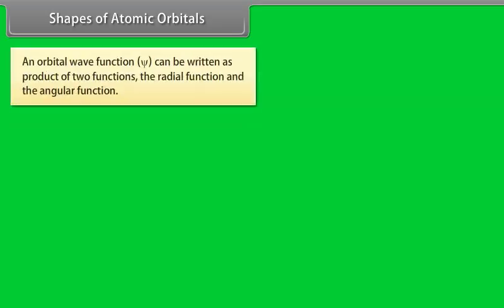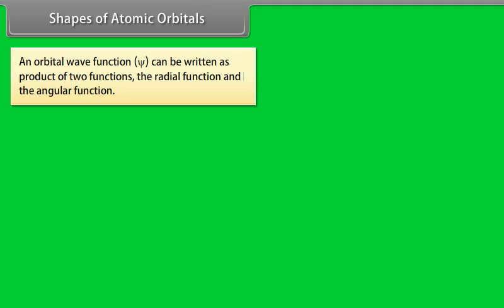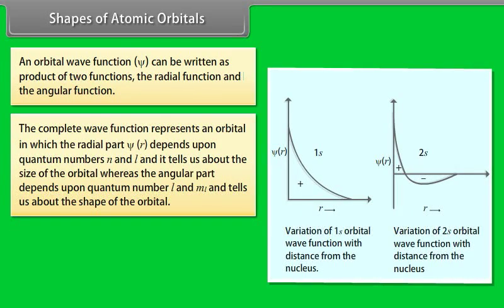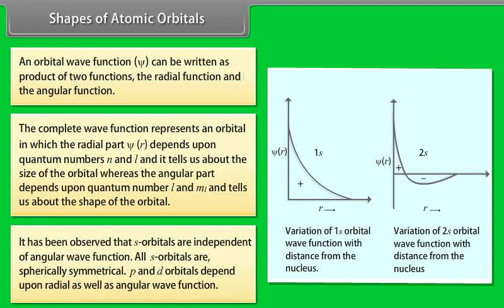Shapes of Atomic Orbitals: An orbital wave function Xi can be written as a product of two functions — the radial function and the angular function. The radial part Xi(R) depends upon quantum numbers N and L and tells us about the size of the orbital, whereas the angular part depends upon quantum numbers L and ML and tells us about the shape of the orbital. The positive and negative signs indicate whether the orbital wave function is positive or negative in a particular region. S orbitals are independent of the angular wave function and are therefore spherically symmetrical, while P and D orbitals depend upon both the radial and angular wave functions.